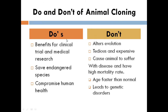Animal cloning has both advantages and disadvantages. The first advantage is benefits for clinical trials and medical research — vaccines can be tried on animals and used for medical research. The second advantage is saving endangered species: since endangered species exist in very limited numbers, animal cloning can produce multiple individuals of that species. The third advantage is improving human health and welfare, as transgenic animals can produce enormous amounts of proteins present in their milk or meat.